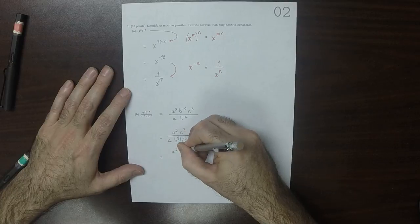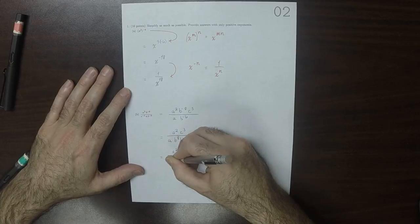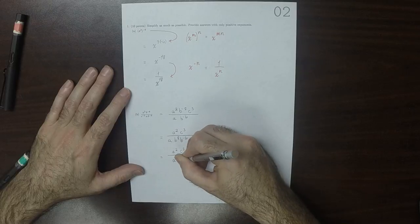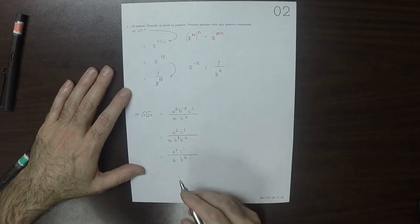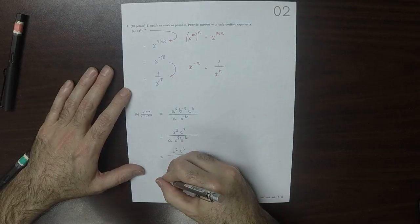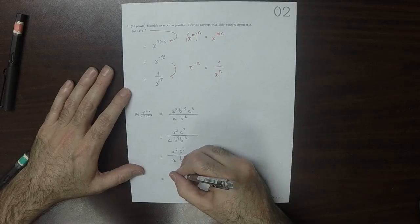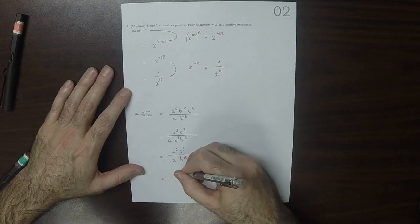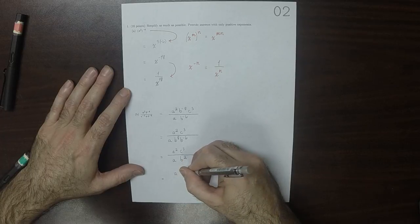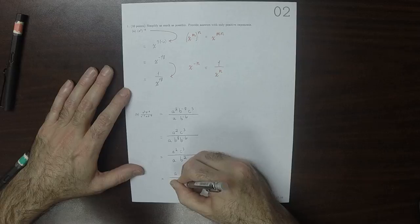a squared, c cubed, over a b squared, and then a squared over a is just an a left over in the numerator, so a c cubed over b squared.